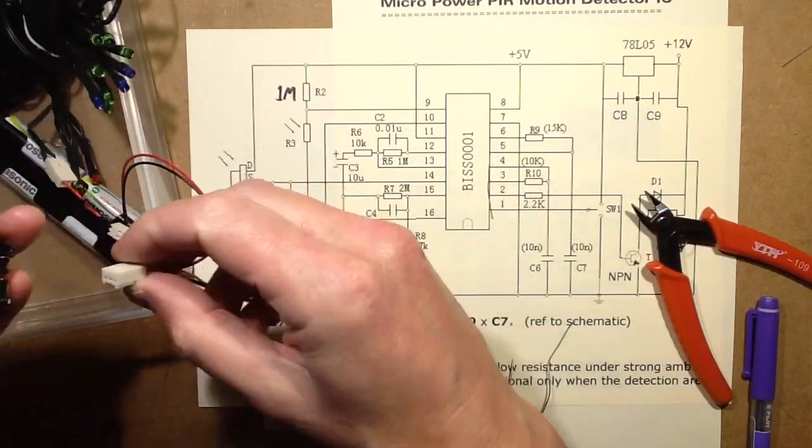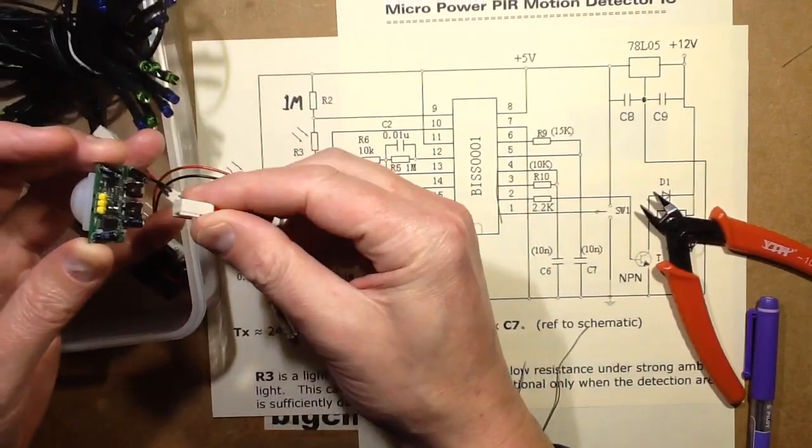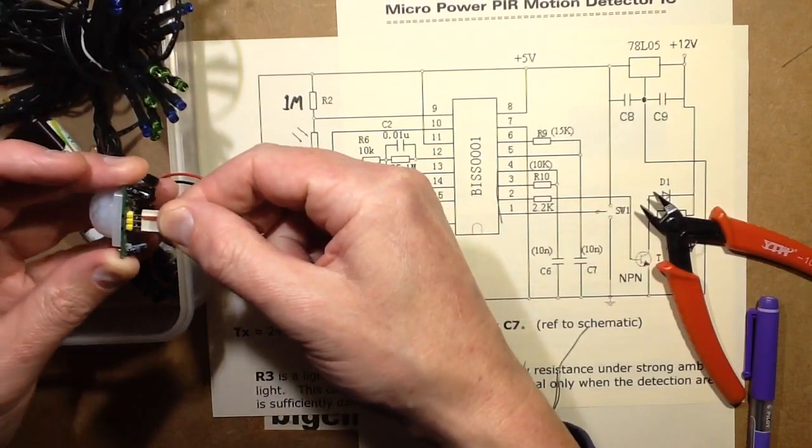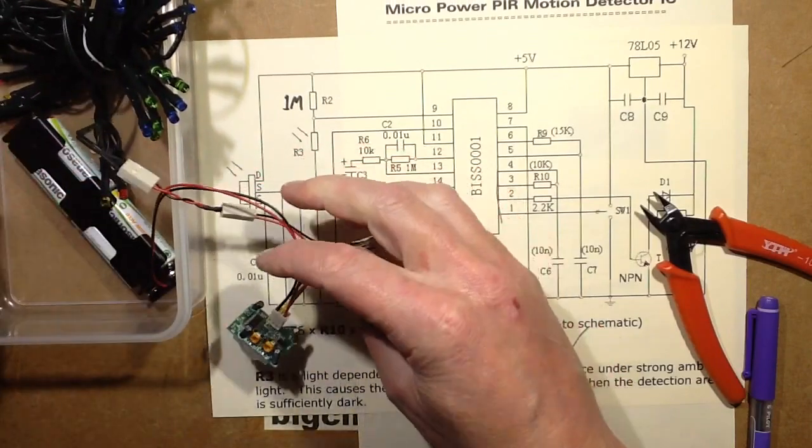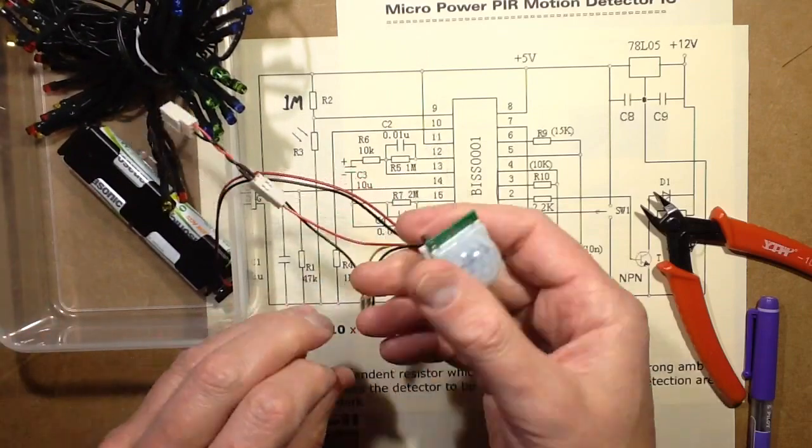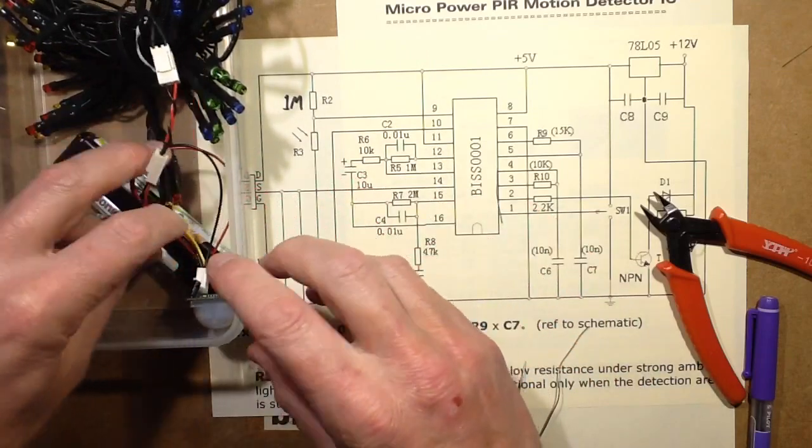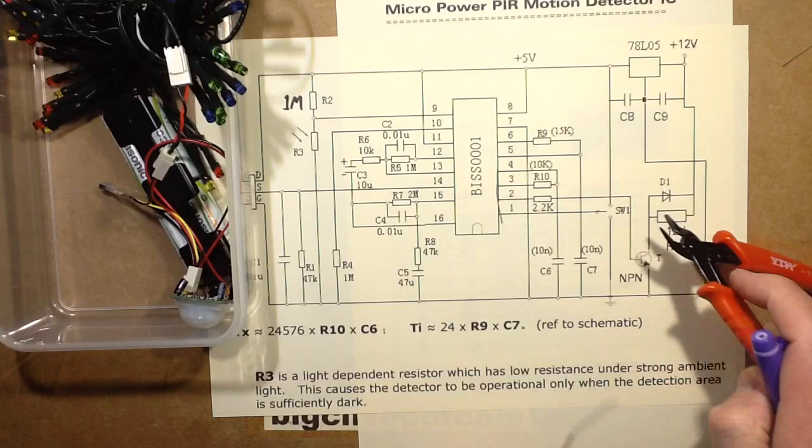So now theoretically if I plug this on, making sure I get it the right way round, it shouldn't trigger. It should only trigger now when it's dark.